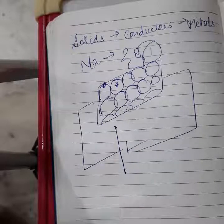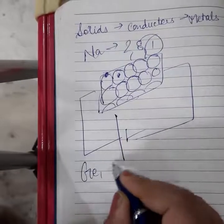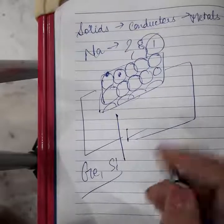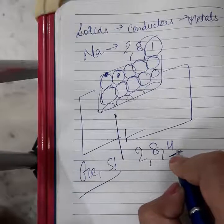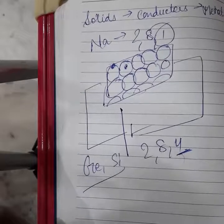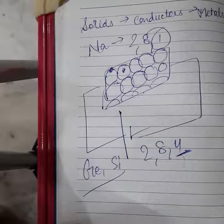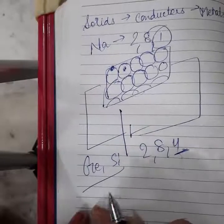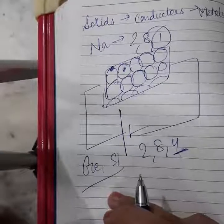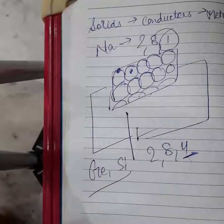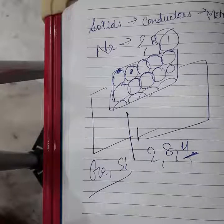In semiconductors like germanium and silicon, the electronic configuration is 2-8-4. Neither can these four electrons be lost nor can four electrons be gained, so covalent bonding is present. When the semiconductor is heated, the covalent bonds start breaking. Whenever a covalent bond breaks, a hole and an electron are generated. So in semiconductors, the charge carriers are electrons and holes. In insulators, there are no charge carriers because they do not conduct electricity.